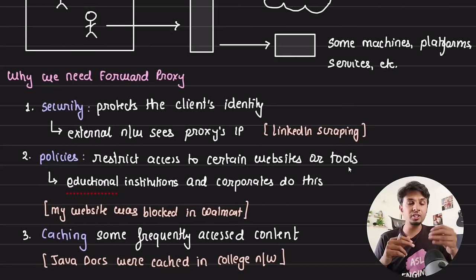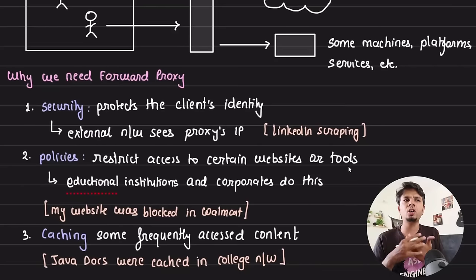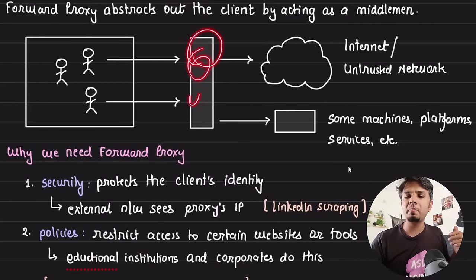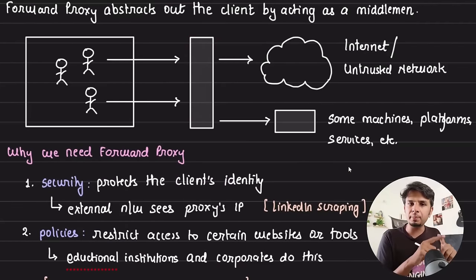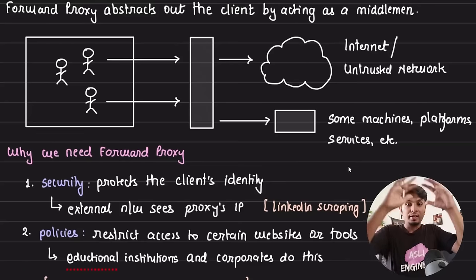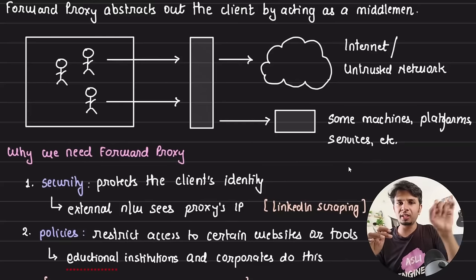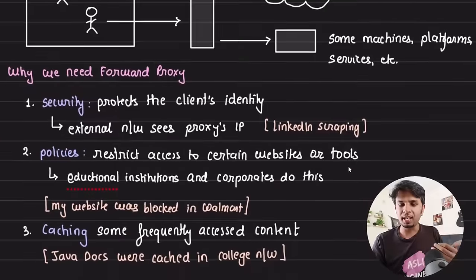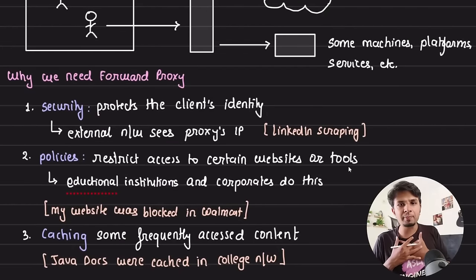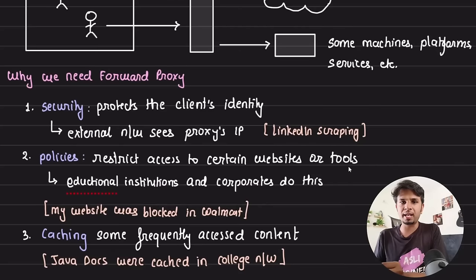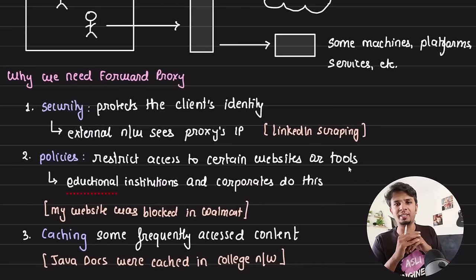Organizations like educational institutes and corporates typically use a forward proxy to protect client identity. A second reason is policy enforcement — organizations can restrict access to certain websites. For example, torrent was banned at my college, and in India, TikTok is blocked. The ISP's firewall, acting as a forward proxy, is configured so any request going to tiktok.com gets blocked. Similarly, my website was blocked at Walmart and had to be whitelisted by an admin.